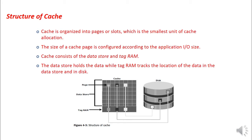Cache is organized into pages or slots, which is the smallest unit of cache allocation. The size of each cache page is configured according to the application IO size. Cache consists of two components: the data store and the tag RAM. The data store holds the data while the tag RAM tracks the location of the data in the data store and on the disk.